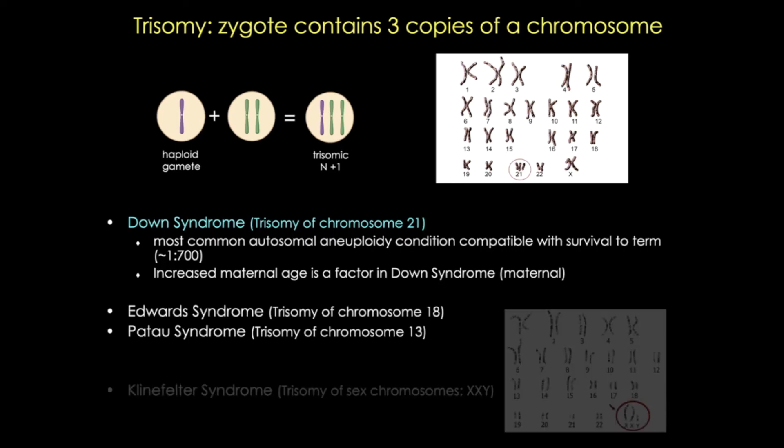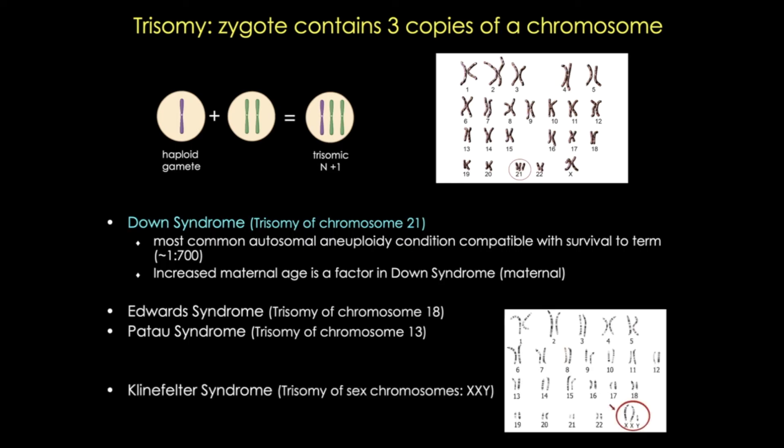The most common trisomy of the sex chromosomes is Klinefelter syndrome, which results from an extra copy of the X chromosome, most commonly due to non-disjunction. Klinefelter syndrome is a genetic condition affecting males, and it isn't often diagnosed until adulthood.